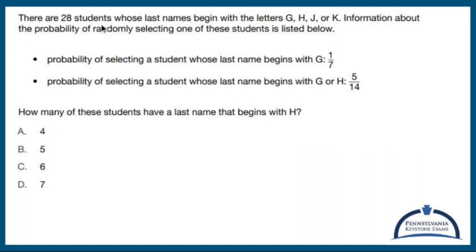Okay, so basically there's a bunch of people I select from. 28 of them have like Gonzalez or Hernandez or Jones or Katz with a K.